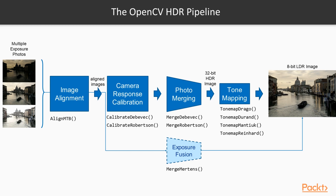OpenCV comes with several tone mapping algorithms, each with its own pros and cons, and you should try them all to see which ones suit your particular app. The exposure fusion algorithm creates a low dynamic range image directly from the multiple exposures without generating an HDR image first, so its pipeline is simpler than the full HDR pipeline.